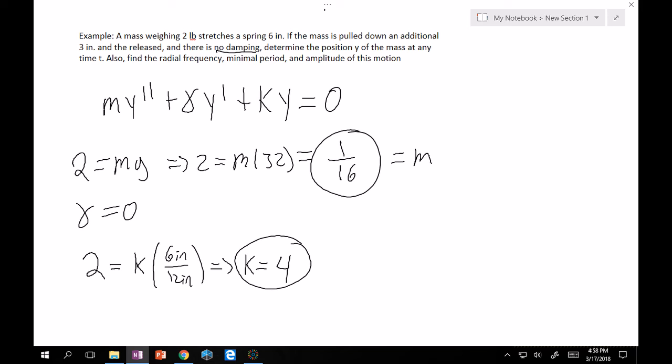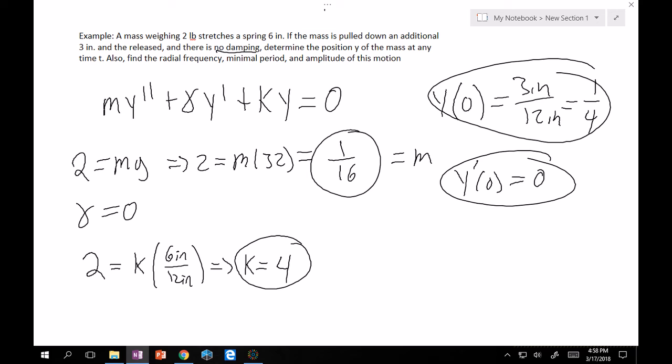And then we want to find our initial conditions. Because they're implied here. Pulled down an initial 3 inches. So that means the position at time equals zero, and we take down to be positive. 3 inches over 12 inches = 1/4. And then that word 'released' simply implies zero velocity. So great. We have everything. We have (1/16)y'' + 4y = 0. And then y(0) = 1/4, y'(0) = 0.